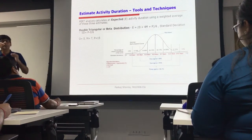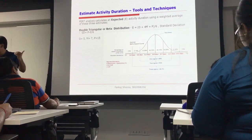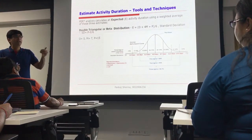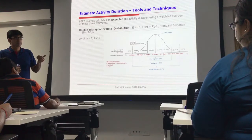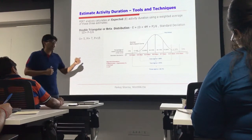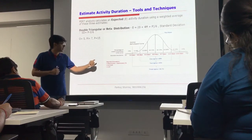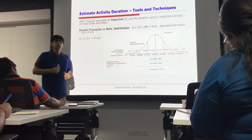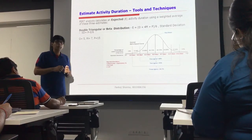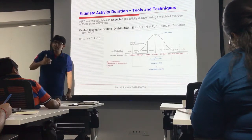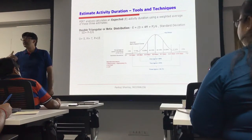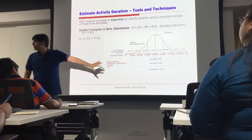The formula is: Pessimistic minus Optimistic divided by 6. For this case it will be 15 minus 5 divided by 6, as depicted on the slide in front of you. So what is the standard deviation? 1.67. Now let's see how we can find out the risk associated with the expected time based on the standard deviation.